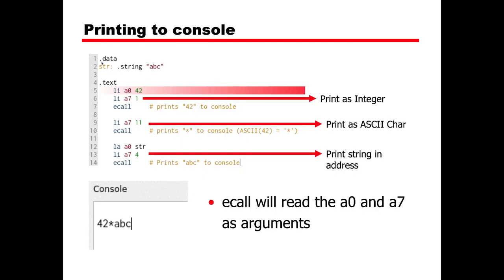Now let's start by printing to the console. We define a string 'abc' in the data section. In the text section, we load 42 into A0 and set A7 to 1 to print it as an integer — you can see 42 in the console. Then we set A7 to 11 to print 42 as ASCII, which outputs the star sign. Finally, we load the address of the string into A0 and set A7 to 4 to print the string 'abc'.